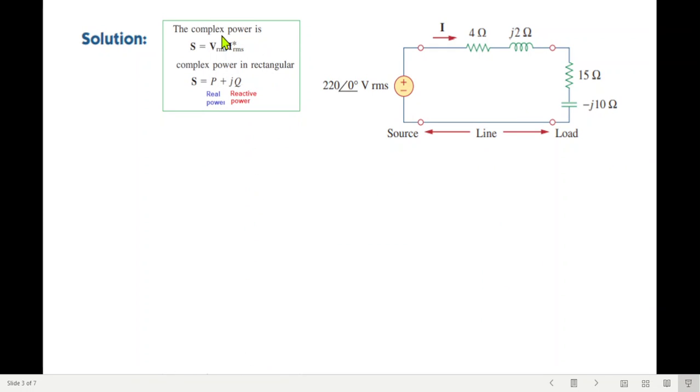First of all, keep in mind that we'll be using these two formulas. To calculate the complex power, we use V RMS into I RMS conjugate. And from there we can calculate the real power and reactive power by using this formula that S is equal to P plus jQ where P is real power and Q is reactive power. The first part: find the real power and reactive power absorbed by the source. So using this formula, we have the V given, but we need current. And for current, we have to find the total impedance, then voltage divided by total impedance will calculate current.